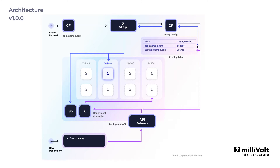So let's say a new HTTP request for app.example.com comes in — the Lambda function is triggered. It then looks up which deployment is currently linked to this hostname and redirects the request to the correct Lambda function or S3 file.